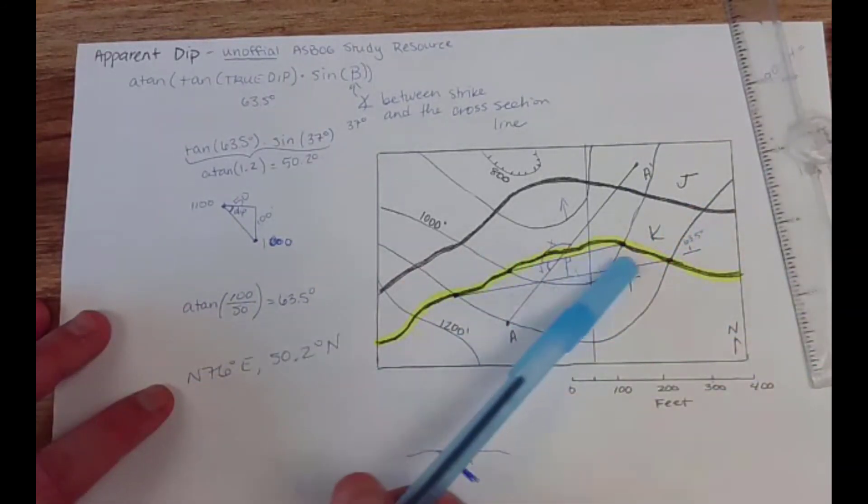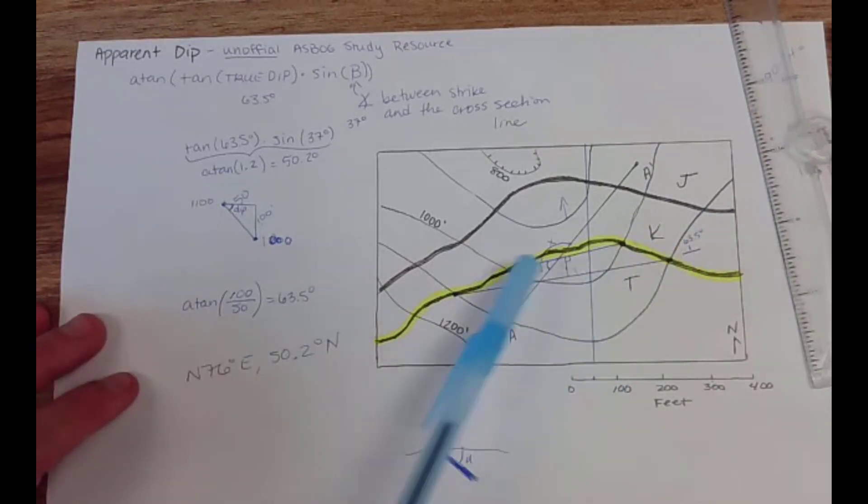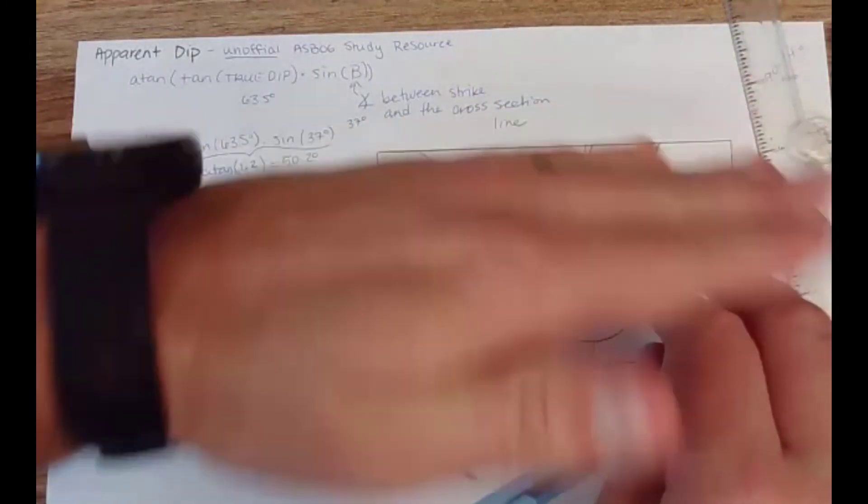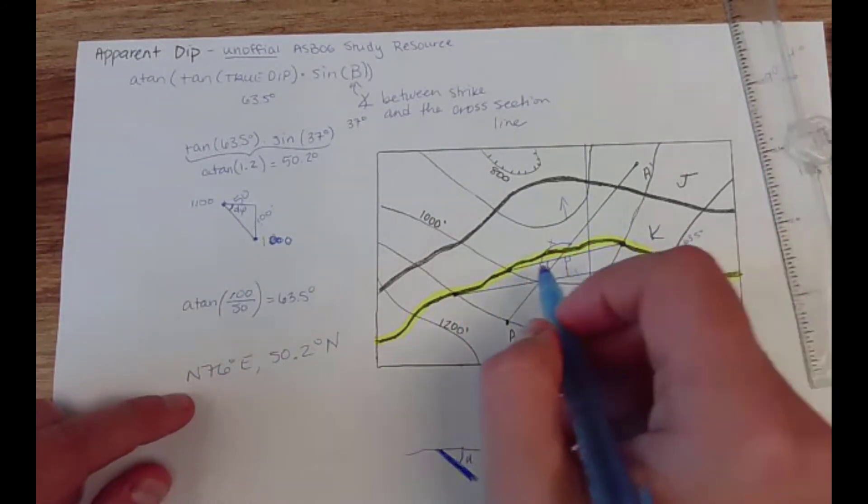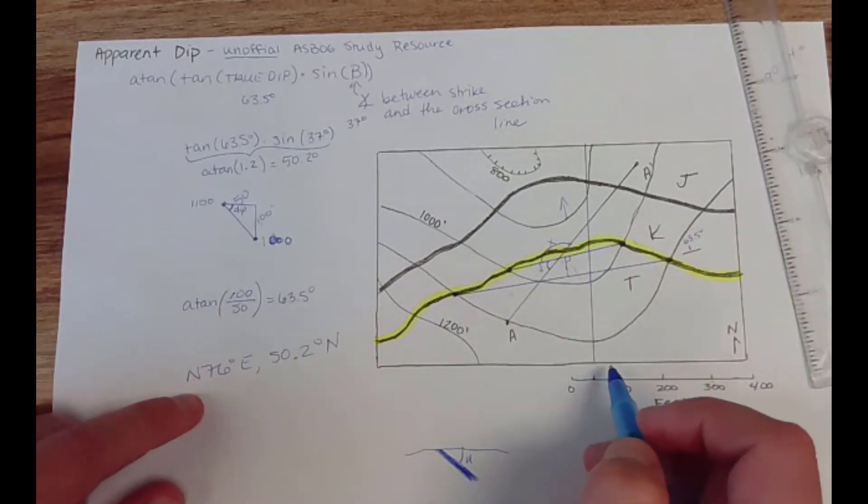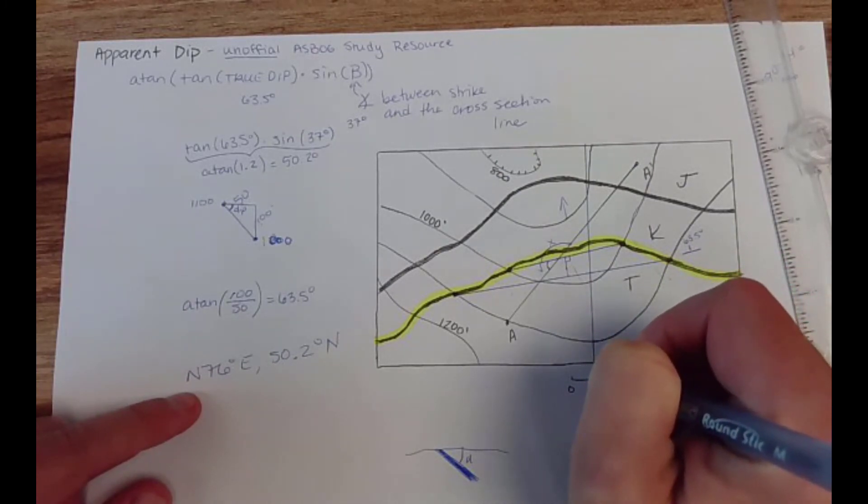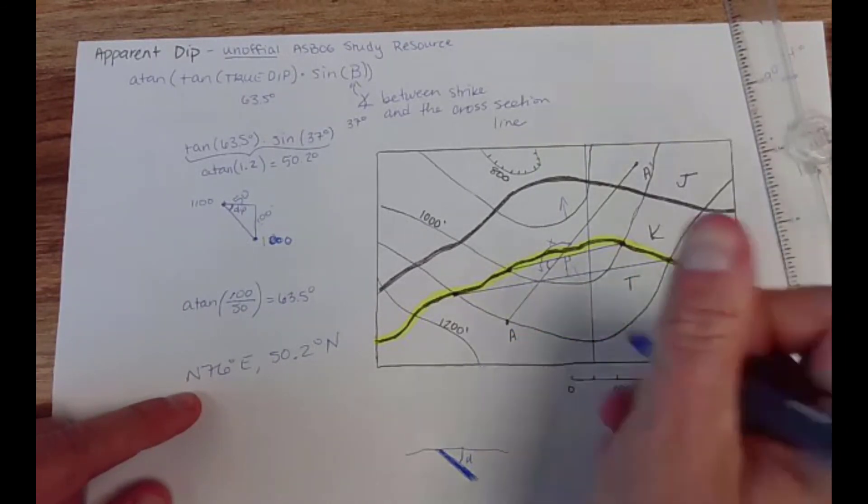Now the problem with this that you might see is that that actually doesn't follow the right-hand rule. If I give this as my orientation this would be going down into the left. So if you want to rewrite it just come over to the other side and you're gonna come down 14, come down another 90, and then you need to move 180 degrees across to get the strike in this direction.